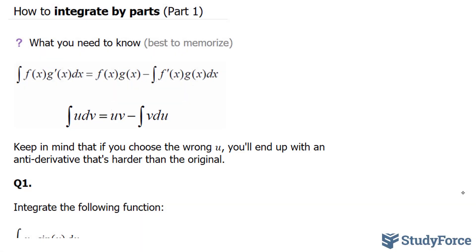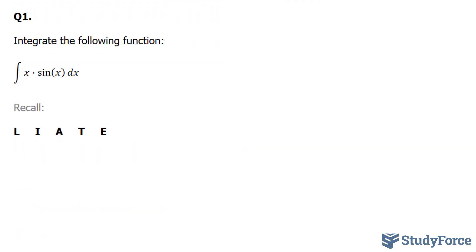In the video prior to this, we discussed how to choose the correct u and dv. Let's jump right into question number one to see how to integrate by parts. We're asked to integrate x times sine x dx. The first thing you'll need to do is assign your u and your dv. We learned that the best way to assign your u is to use this order: logs get more priority than inverse trig, inverse trig gets more priority than algebra, algebra gets more priority than trigonometric functions, and exponential get the least priority of them all.